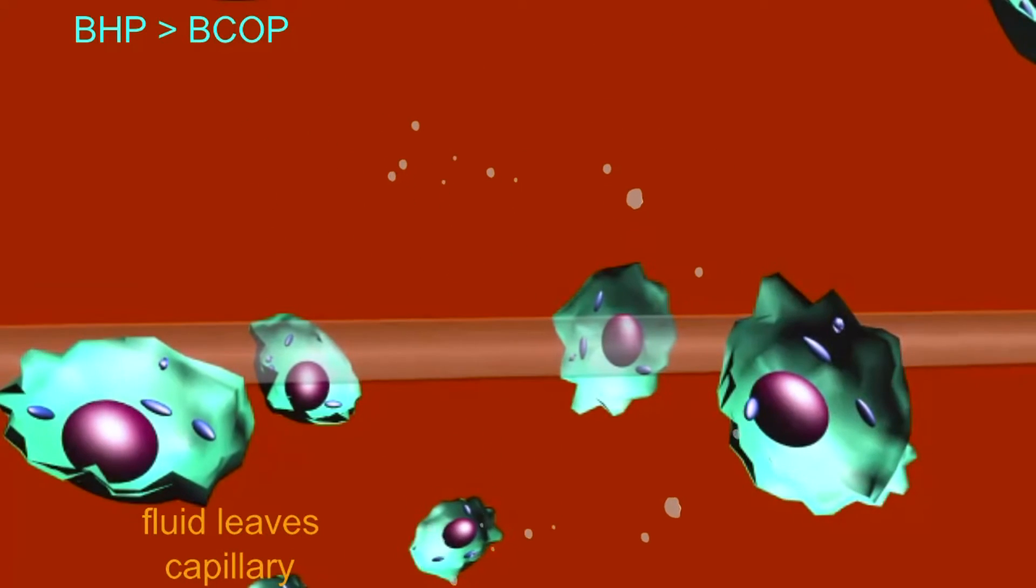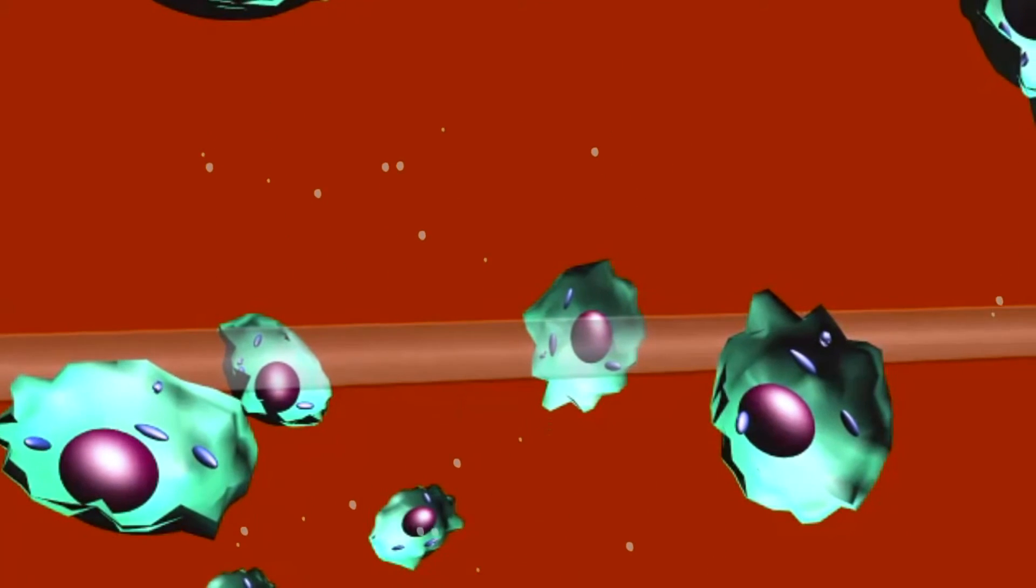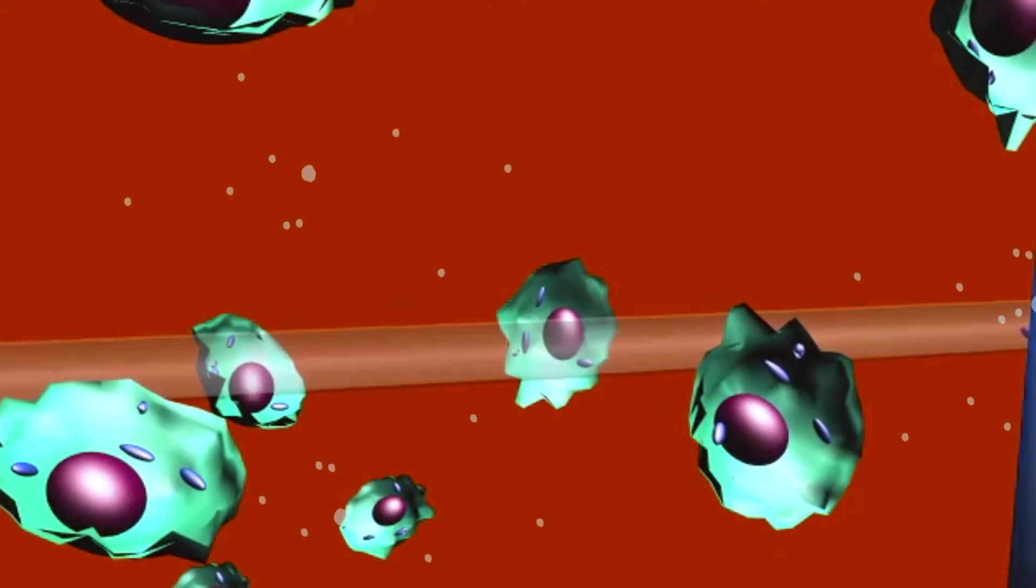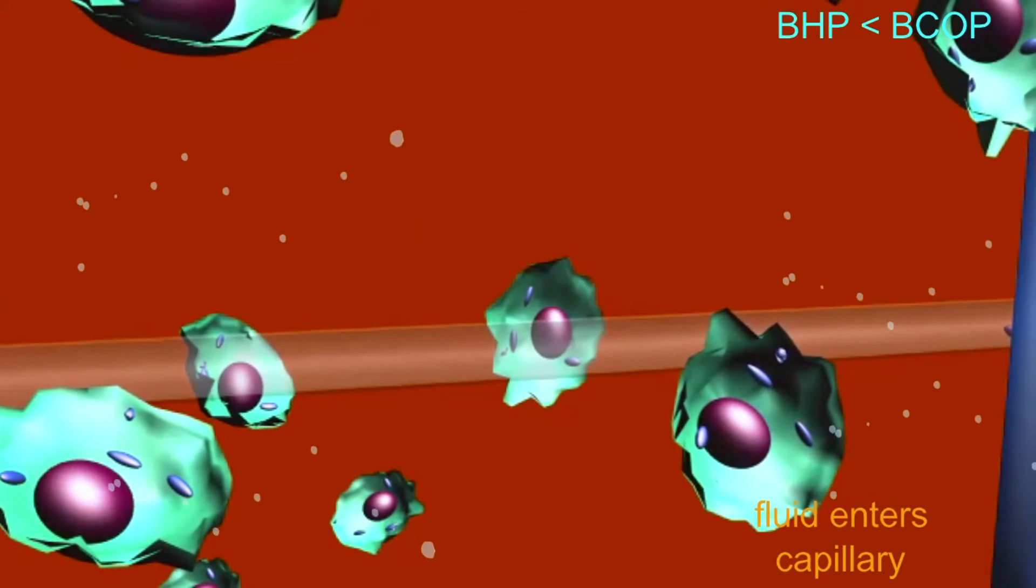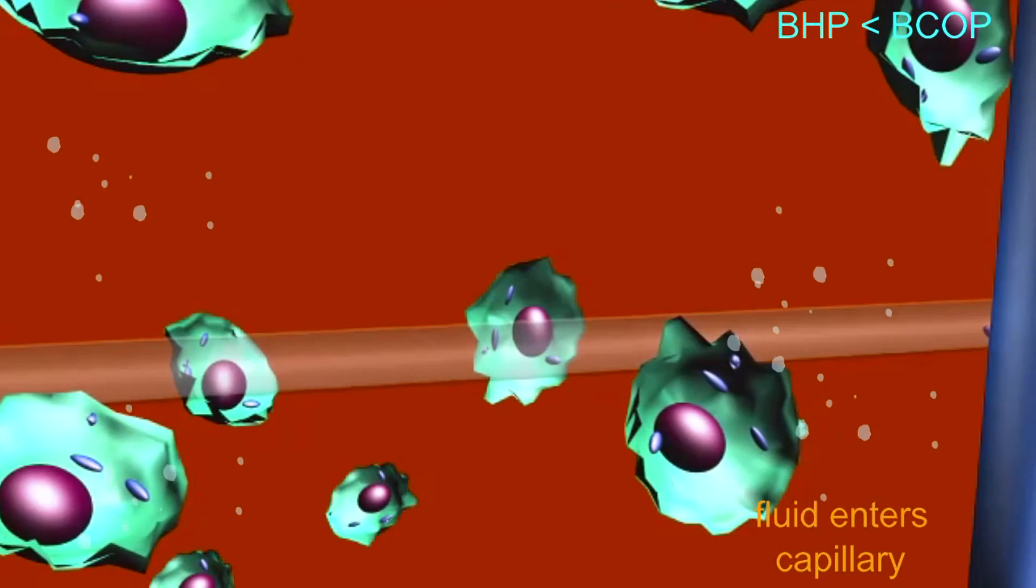At the venule end of the capillary, the blood hydrostatic pressure is less than the blood colloid osmotic pressure. Therefore, there is a net filtration pressure drawing fluid into the capillary from the tissue.